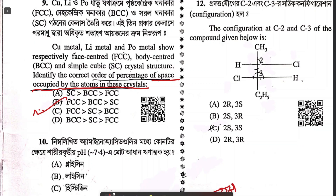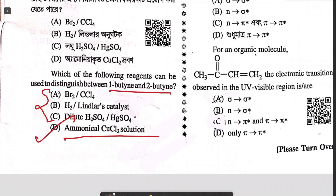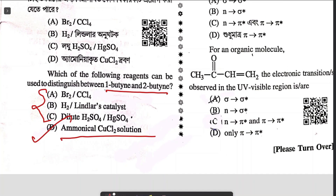Question twelve is straightforward — they want the configuration at position 2, and the correct answer is option C. Question thirteen gives molecules CO, CS, and CS2. The electronic transitions observed in the UV-visible region are n→π* and π→π* transitions. Answer: n→π* and π→π*.